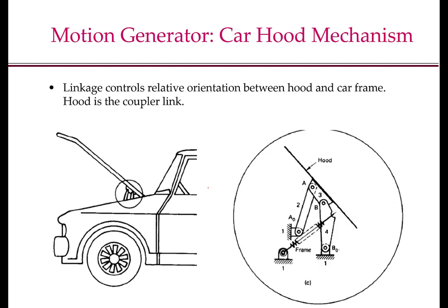An example of a motion generator — where both the position and orientation of the coupler is of interest — is the car hood mechanism. The linkage controls the relative orientation between the hood and the car frame, and the hood is actually the coupler link. The spring holds the hood in the desired position. The mechanism is a 4-bar mechanism. This is the end of the overview of mechanism synthesis.